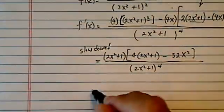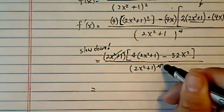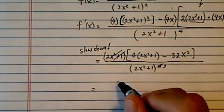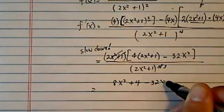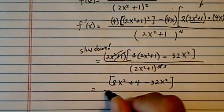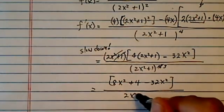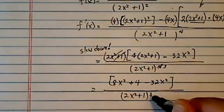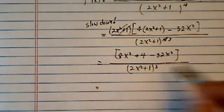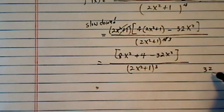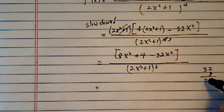All the way to 2x squared plus 1 to the 4th. It's starting to look a little better because I can cancel this one, make it to the 3rd. And then on the top, I have 8x squared plus 4 minus 32x squared, which is not too bad looking.